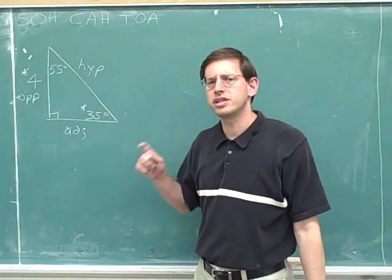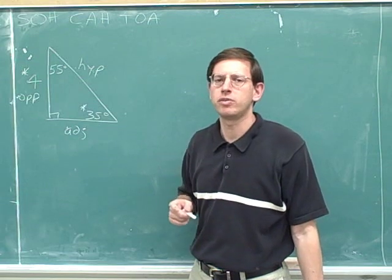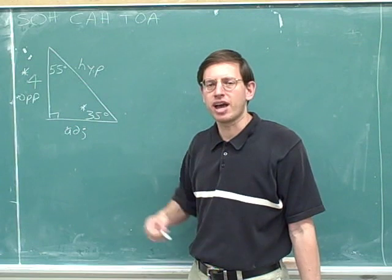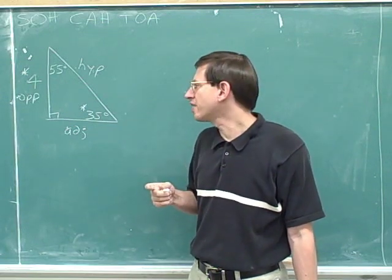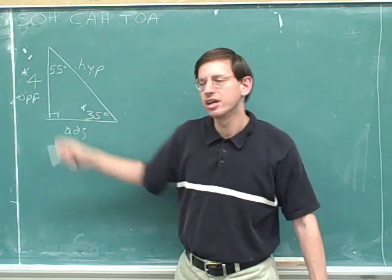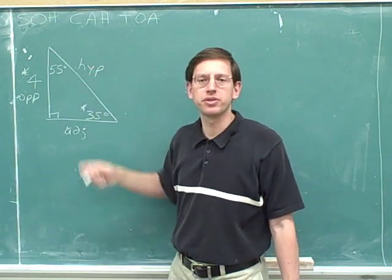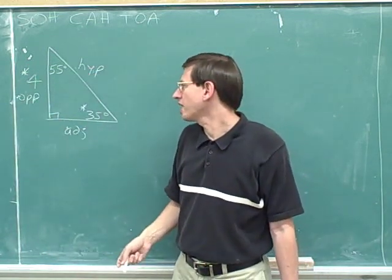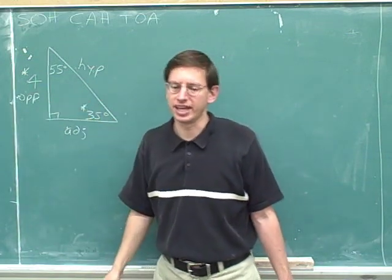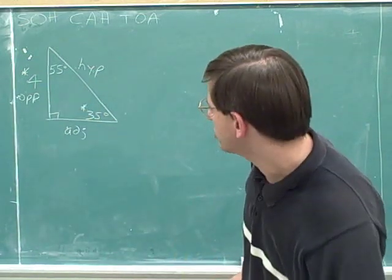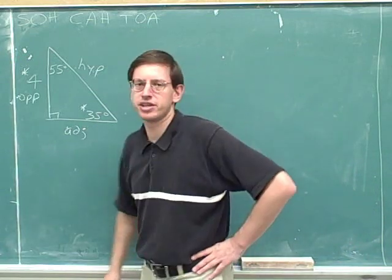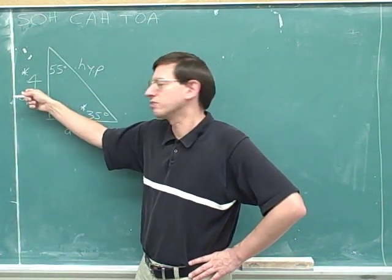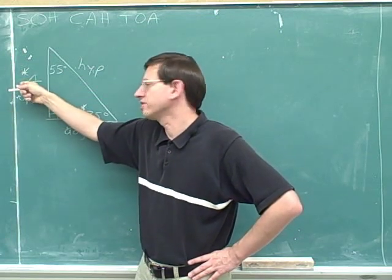Now, did you notice that this problem is a little different from all the previous problems? In all the previous problems I gave you the hypotenuse, but in this problem I gave you one of the legs. We were not told the hypotenuse — instead we were told a leg. So we have to figure things out not based on the hypotenuse, but based on the leg. Which trig functions are going to be useful to us? The only way we can figure things out is if we use the information we've been given — this number 4, which is the opposite side.